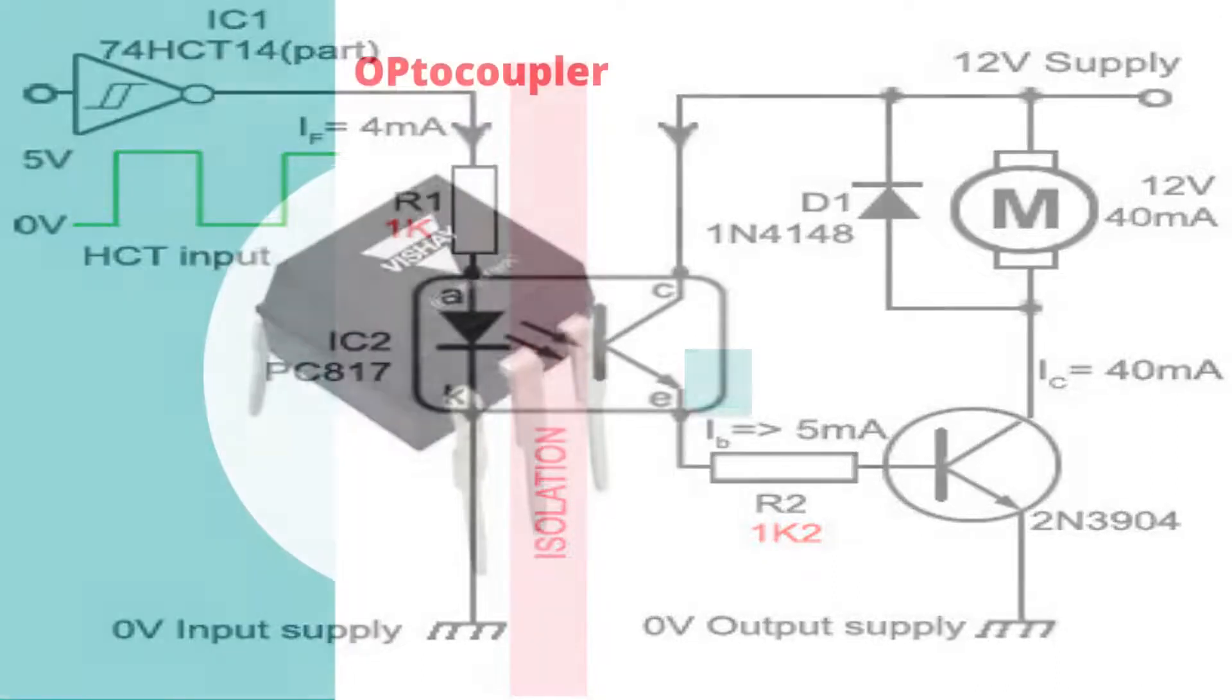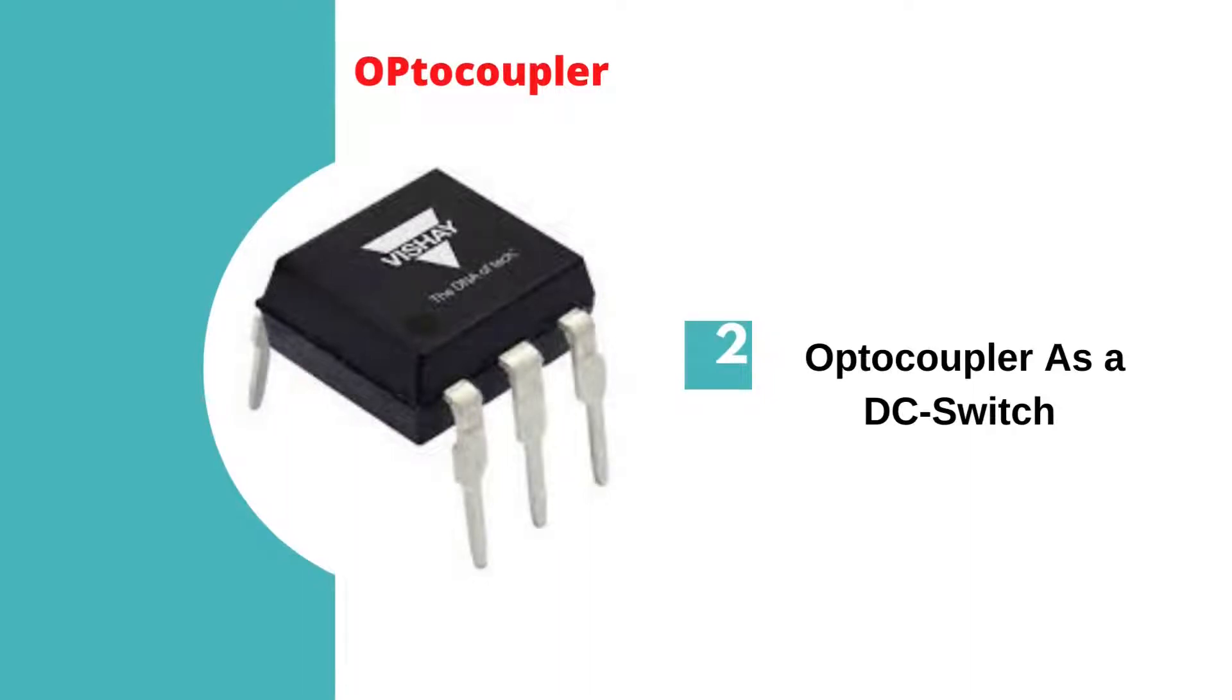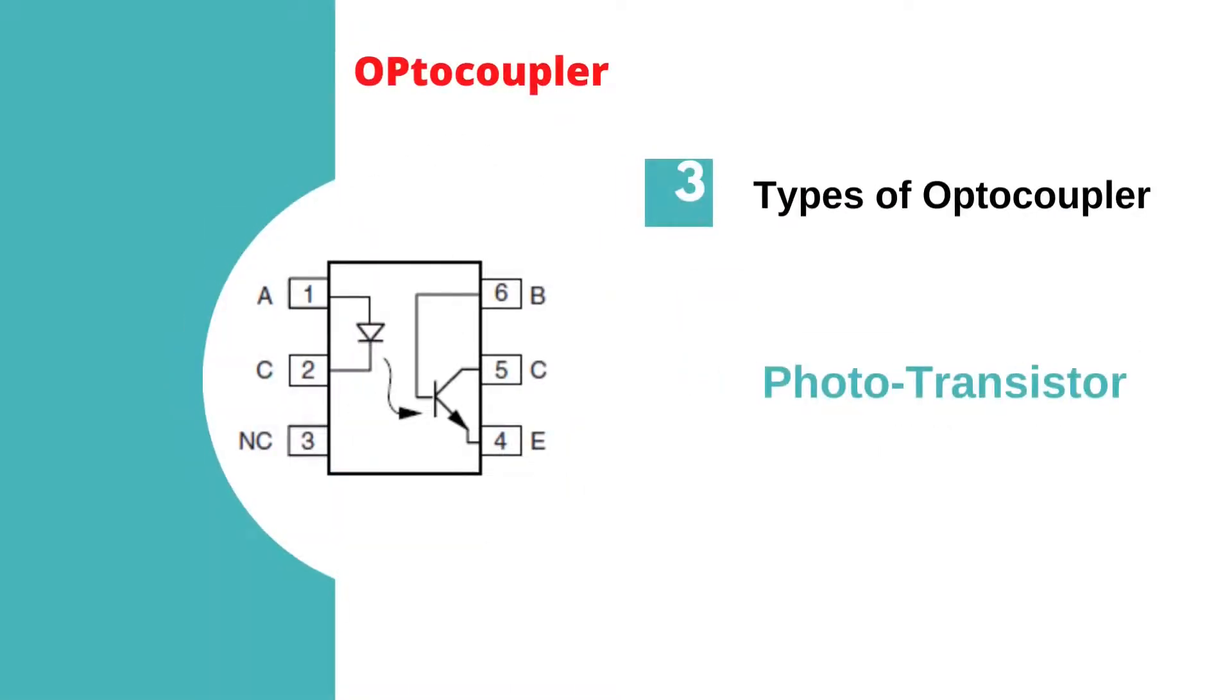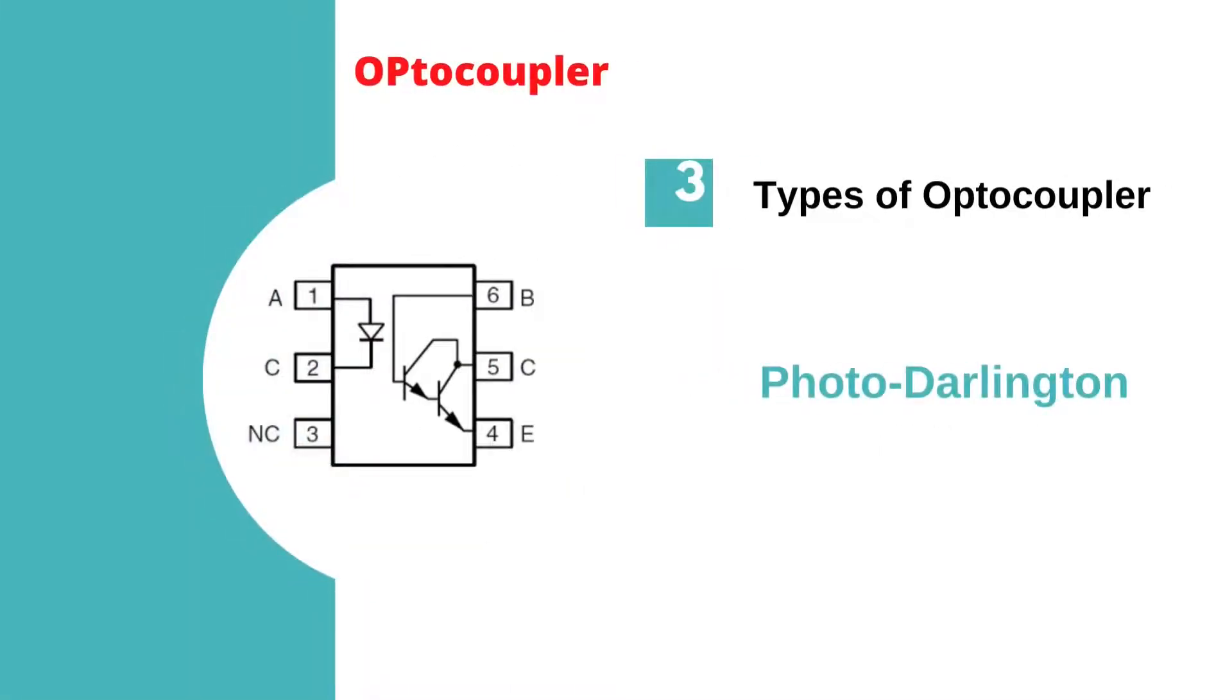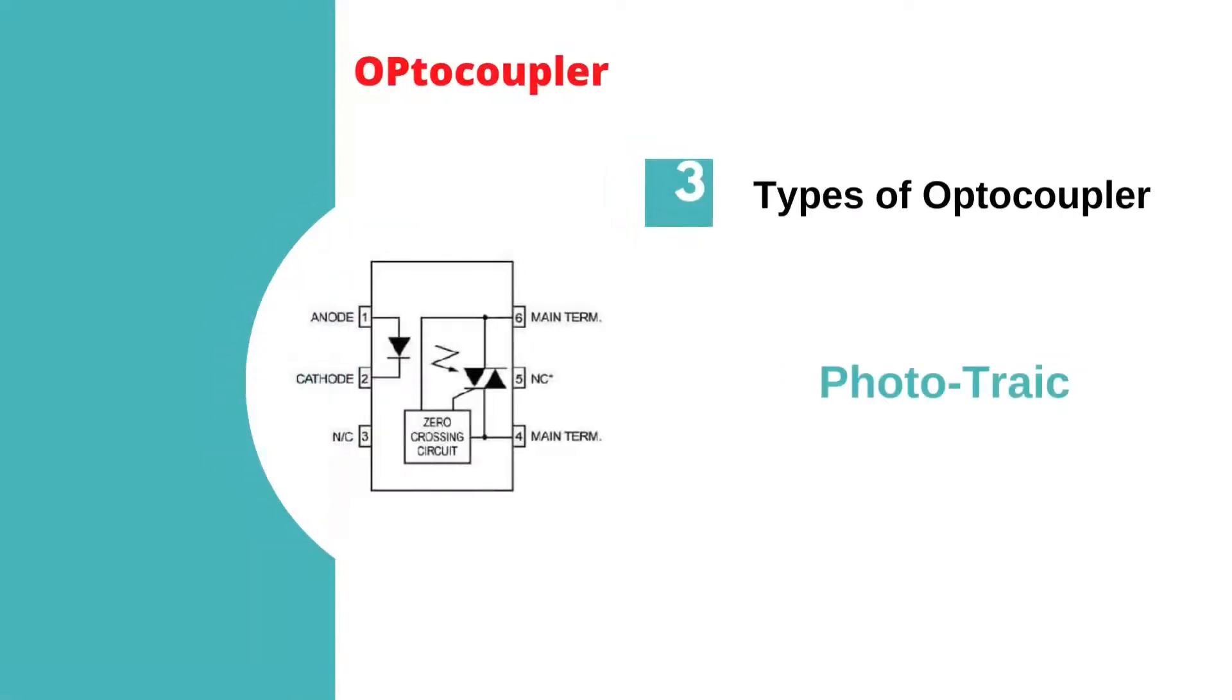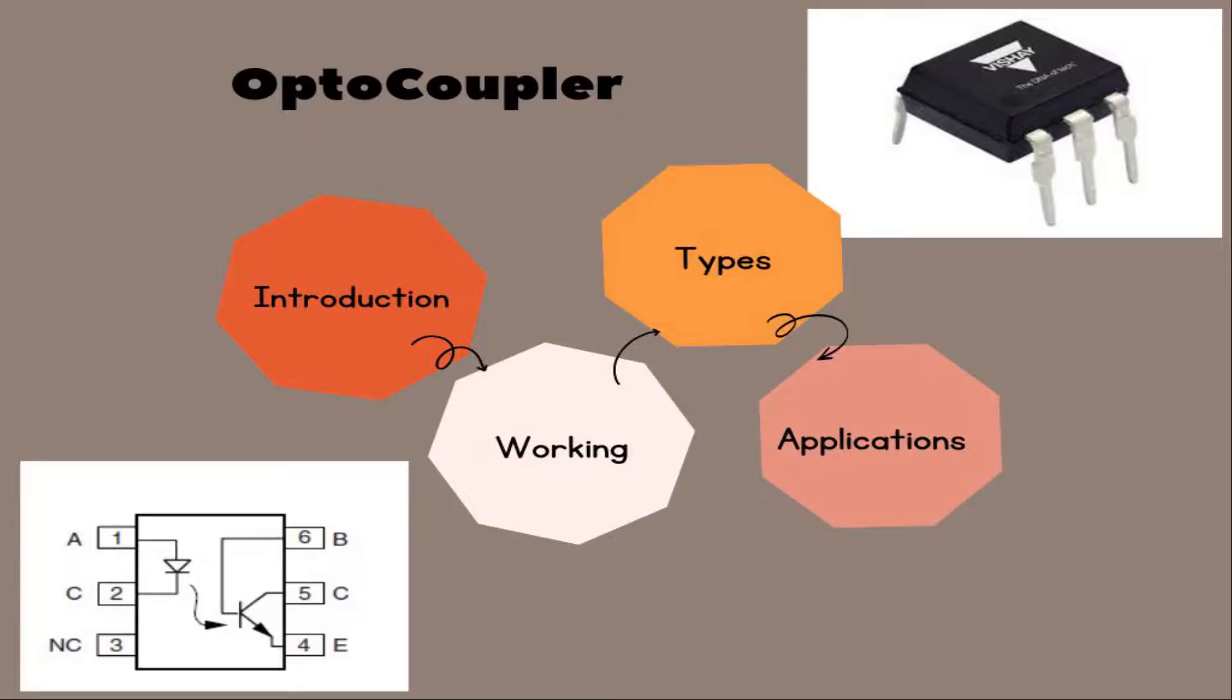Next in the video we'll briefly discuss about working principle of optocoupler, optocoupler as a DC switch, types of optocouplers, phototransistor, photo-Darlington, photo-SCR, photo-TRIAC, and finally about various applications of optocouplers.